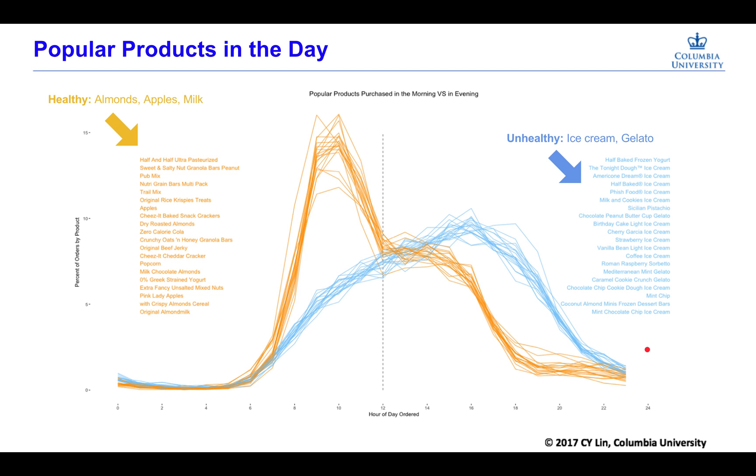We then made a graph about popular products in the day and it is split by 12 p.m. We can see, in the morning, customers tend to buy healthy foods like almonds, apples, and milk. However, in the afternoon or in the evening, customers tend to buy unhealthy foods like ice cream and gelato. We can see the top 20 popular products in the evening are like ice cream.